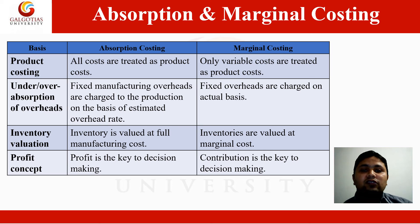Third, on the basis of Inventory Valuation: in Absorption Costing, inventory is valued at full manufacturing costs including both Fixed and Variable Costs, which carries over fixed costs from one period to another along with closing stock, distorting trading results and vitiating cost comparison. Under Marginal Costing, inventories are valued at marginal cost since no part of fixed manufacturing costs is included in closing inventories — there is no problem of carrying over fixed costs and no consequent distortion in trading results. Fourth, on the basis of Profit Concept: under Absorption Costing, profit is computed and decisions are taken on that basis, while under Variable Costing, contribution is the key to decision making.